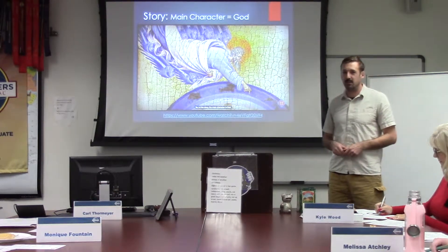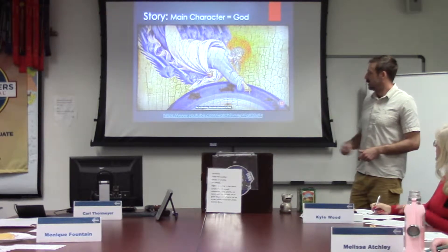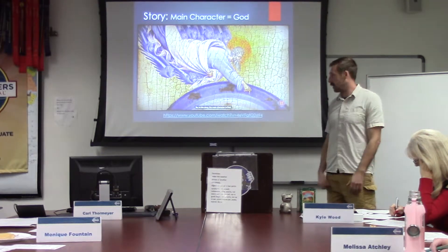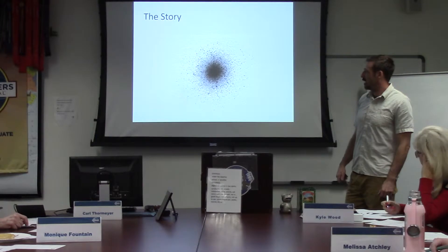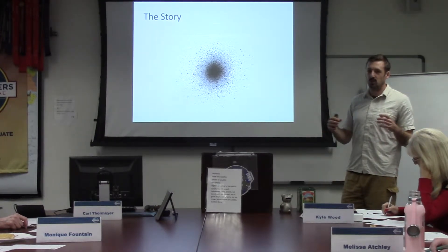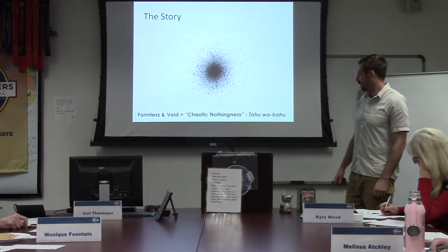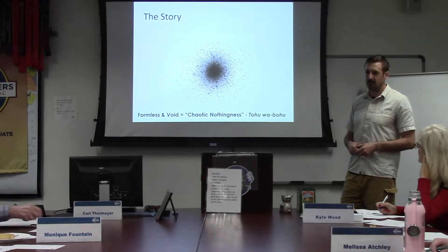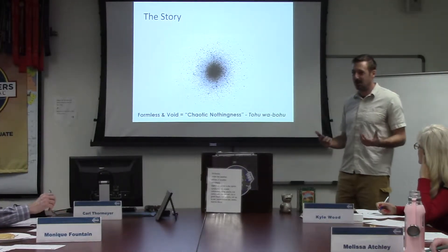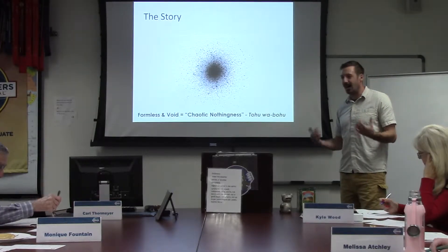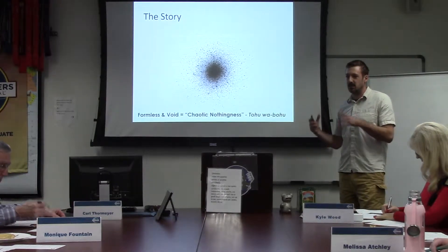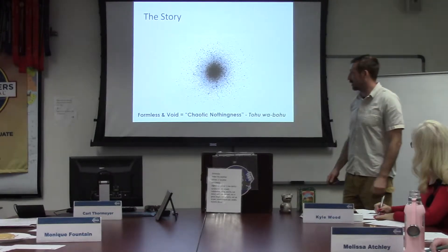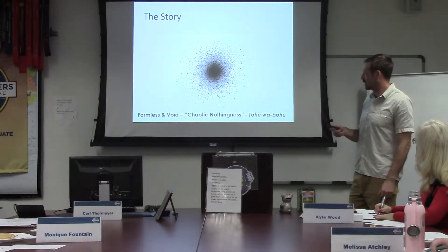"In the beginning, God" is the way this story starts off. God is the main character, and throughout the story he is separating things and creating. At the beginning it says the earth was formless and void. The Hebrew word for this is tohu wabohu — which is really fun to say. The way I heard it explained was as a chaotic nothingness: if you took nothing and put it into a blender and cranked it all the way up, this is what you would get.